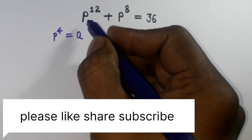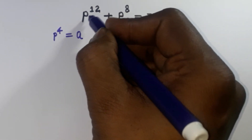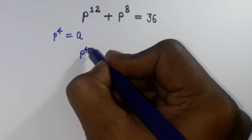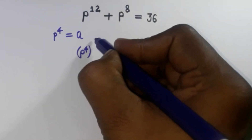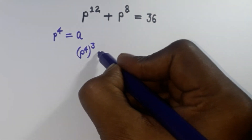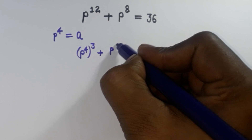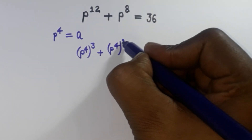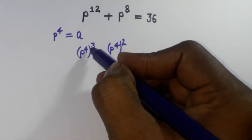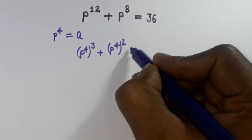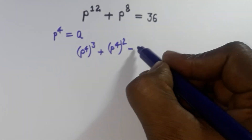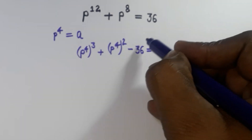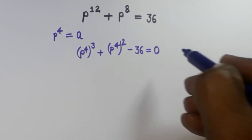This value can be written as p to the power 4, raised to the power 3. And here p to the power 4 raised to the power 2. So 4 times 3 is 12, and 4 times 2 is 8. And 36 is coming on the left side, becoming minus 36 equal to 0.